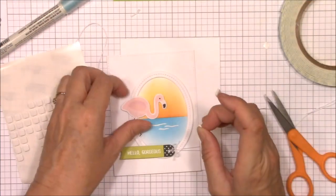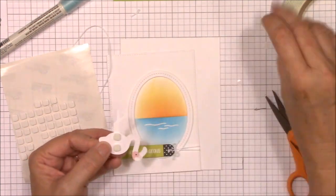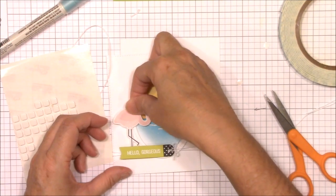Next, I'm adding the flamingo die cut to the image panel using foam squares. Doing this adds a bit of bulk, but the 3D dimension is necessary to give the illusion of distance.